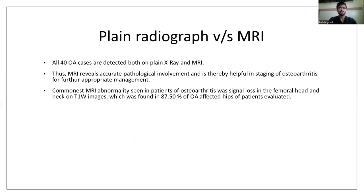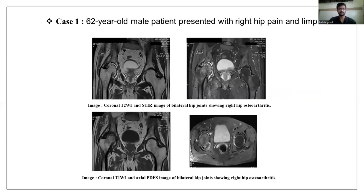Comparing plain radiograph versus MRI: in the 40 diagnosed patients, they were detected on both X-ray and MRI, but MRI revealed accurate pathological involvement and was helpful in staging the osteoarthritis and for further appropriate management. The commonest MRI abnormality in osteoarthritis patients was signal loss in the femoral head and neck on T1-weighted image, found in 87.5% of patients in this study.